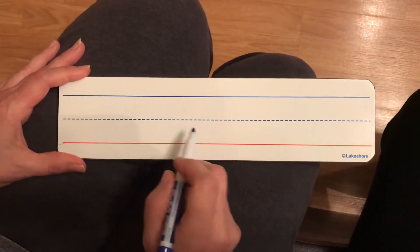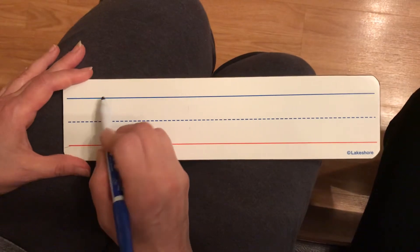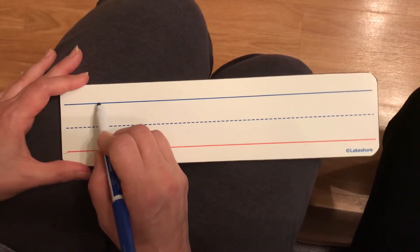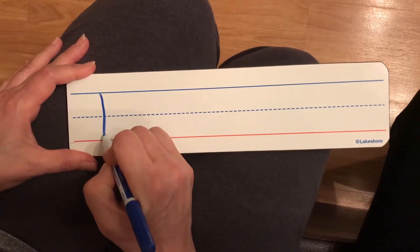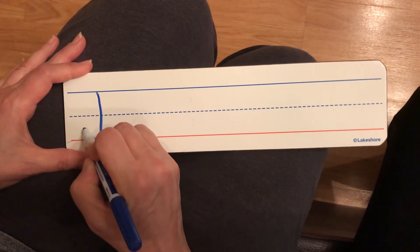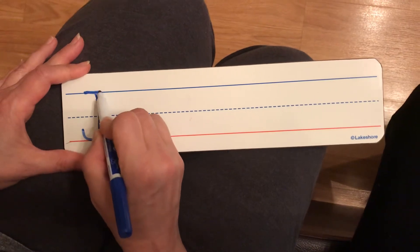We are going to start with uppercase J and remember we always start at the top with uppercase letters. So we're gonna start at the top and do a big line down, turn up, and then a little line across.